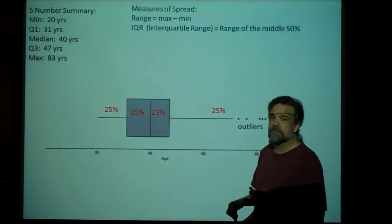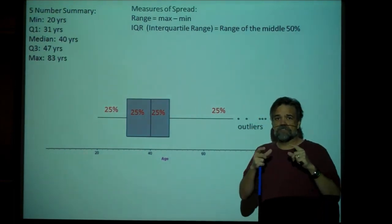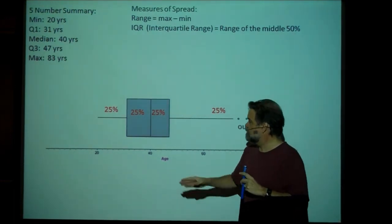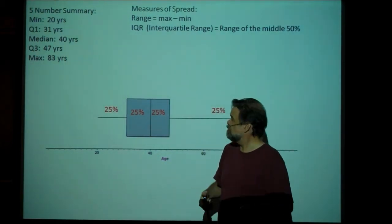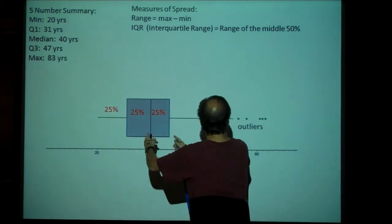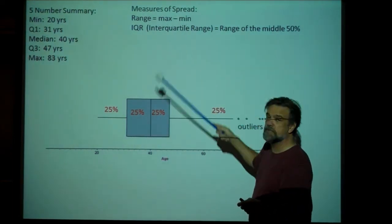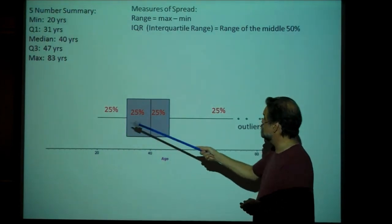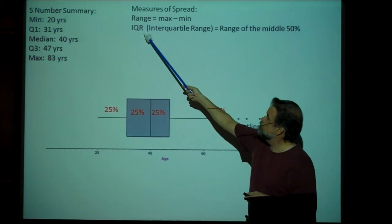And the something else I want to talk about is ways of measuring spread. Now, we talked about how to measure the center of the data with the median. Now I want to talk about how to measure spread. Well, one way is really easy. You just take the range. Just look at the maximum value minus the minimum value. And that's going to get you the range of your data.